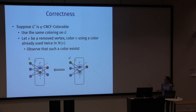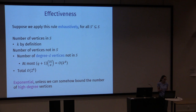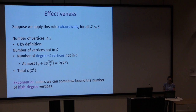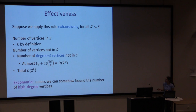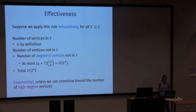This gives a general reduction rule. If we apply it exhaustively for all subsets of S, for every constant degree D the number of degree-D vertices not in S is bounded by K-choose-D times (Q+1), giving K-to-the-D degree-D vertices. Unfortunately, summing over all degrees gives exponentially many vertices. The idea is to separately bound the number of high-degree vertices not in S and combine it with the polynomial bound on low-degree vertices.